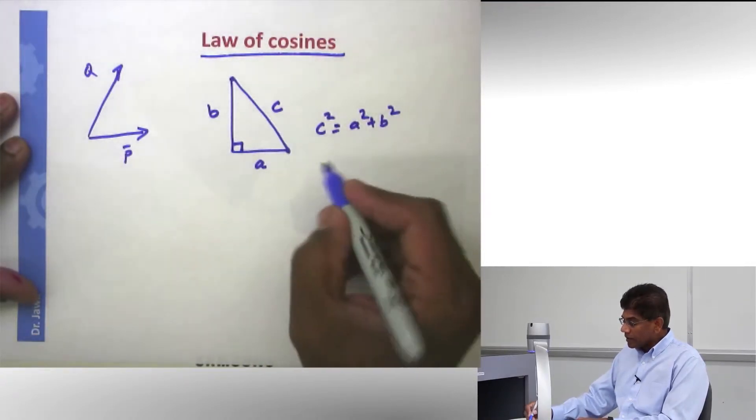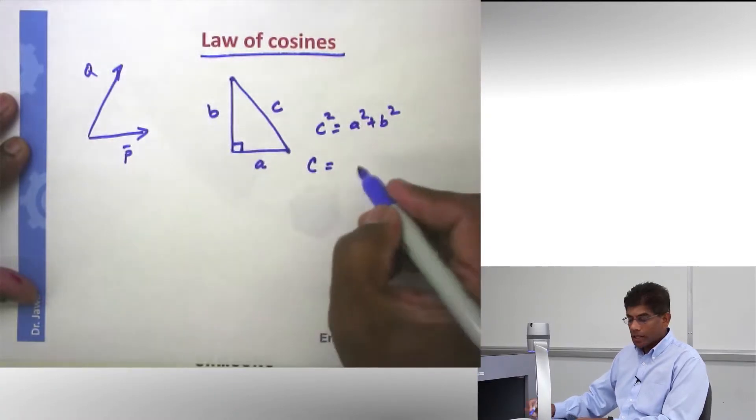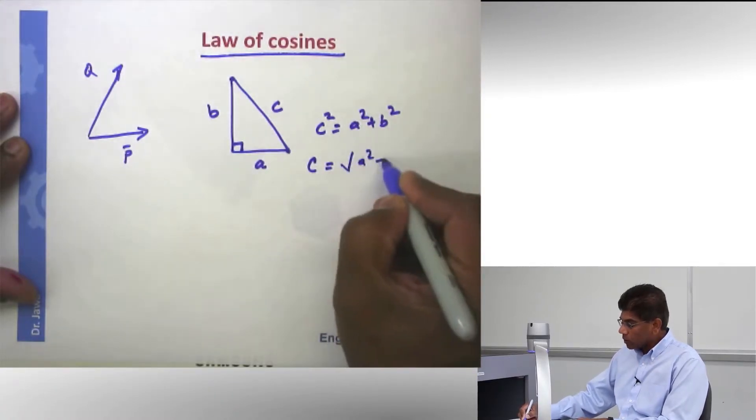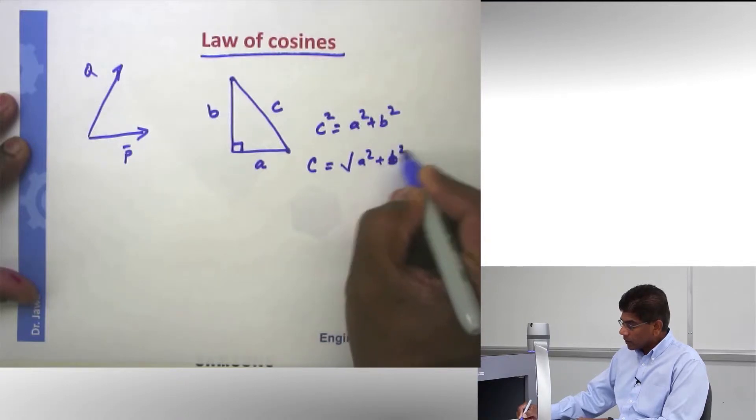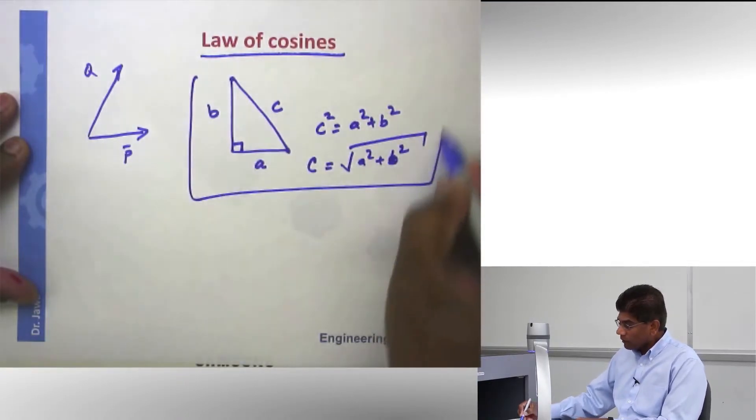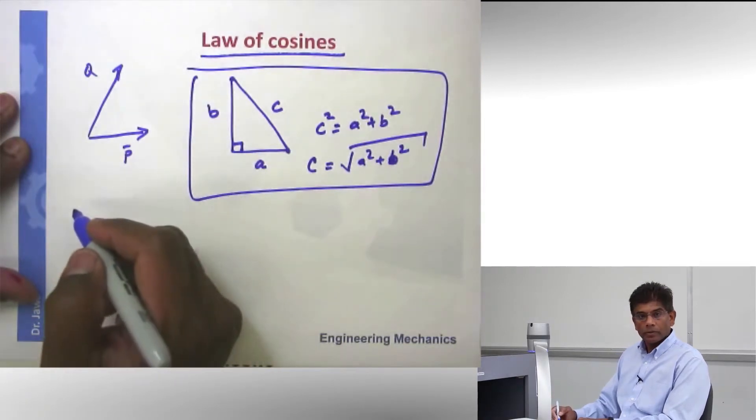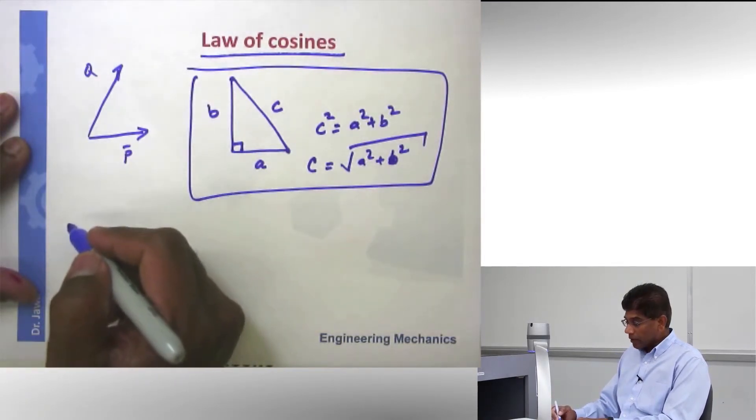And if I want to find this side C, assuming the other two legs I know, it is going to be square root of A squared plus B squared. This is a formula you have learned long time ago, the famous Pythagorean theorem.